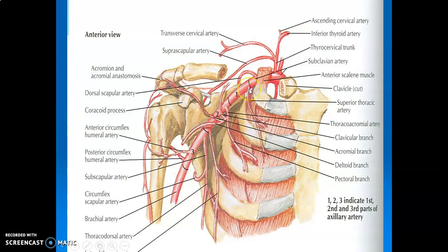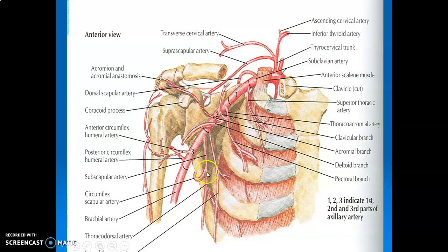The first part has one branch: the superior thoracic artery. The second part has two branches: thoracoacromial and lateral thoracic. The thoracoacromial has four branches: pectoral, acromial, deltoid, and clavicular. The third part has three branches: subscapular, which divides into circumflex scapular and thoracodorsal; anterior circumflex humeral; and posterior circumflex humeral, which go around the anterior and posterior parts of the surgical neck of the humerus respectively.